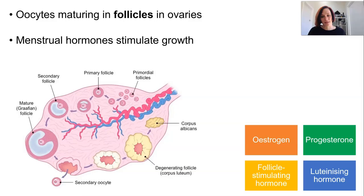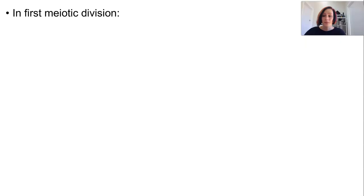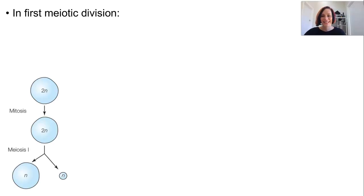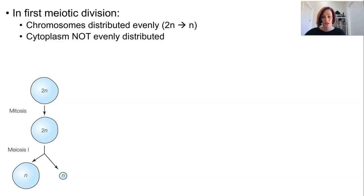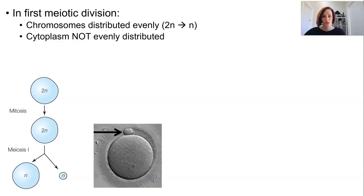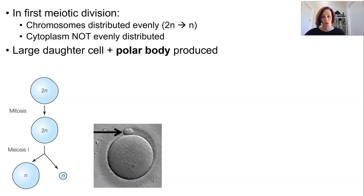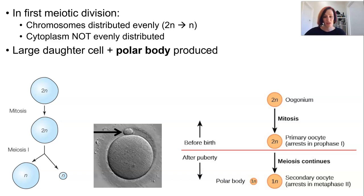Only one follicle will mature and remain; the rest go on to produce hormones. As that one remaining follicle matures, the primary oocyte does as well, and the first meiotic division completes. Usually the first meiotic division produces two haploid cells, but in oogenesis when the final cytokinesis occurs, the chromosomes are evenly distributed but the cytoplasm is not — one daughter cell gets almost all of the cytoplasm, and the remaining cell is known as a polar body.